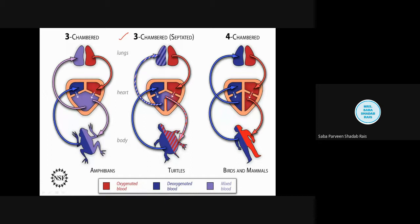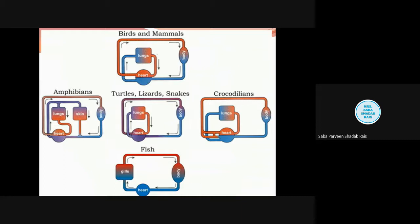Now imagine the organisms that have to work in a diving situation — for long periods of time they have to hold the breath, like the crocodile. This particular type of circulation will not work for them. Today we are going to discuss in detail about the crocodile heart, but first understand what changes are happening with evolution. The three-chambered heart with partial septation has brought better quality blood — more oxygenated — but still some partial mixing occurs.